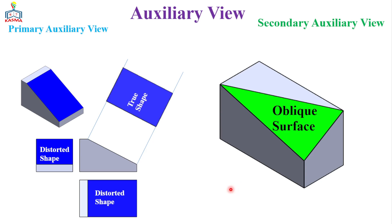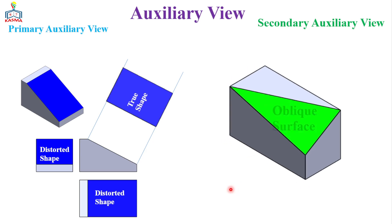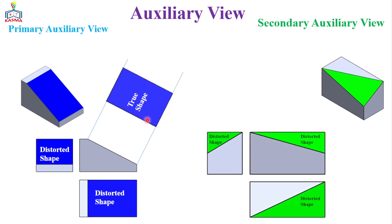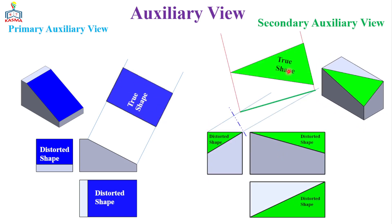You can get these resources in the video description. The purpose of the auxiliary view is just to get the exact size and the exact shape of the given object. It's known that if the object is an inclined surface or an oblique surface, it may not have any true shape on either of the six principal views. This is why we use a supplementary view or auxiliary view to get the exact size and shape.